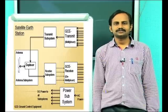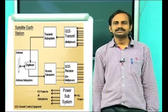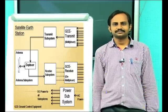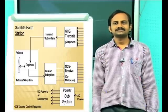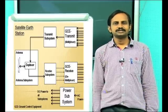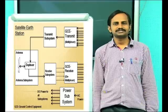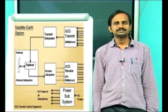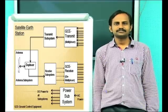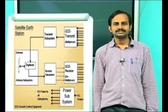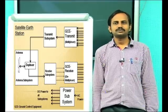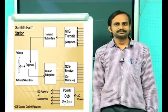Let me go in detail about the earth station. The earth station consists of 5 major subsystems: the antenna subsystem, the receive subsystem, the transmit subsystem, the power subsystem, and the ground controlled equipment subsystem.